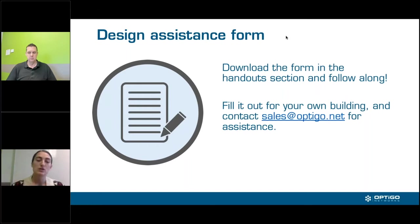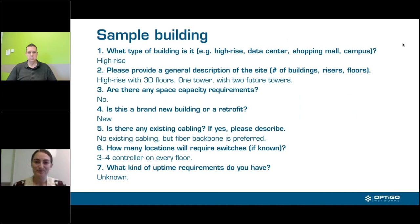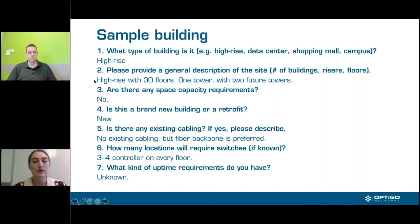Either you fill the design assistance form out if you know what the network is going to look like, or get your customer to fill it out. Attached to this webinar in the handout we have an example form filled in, and in the email you also have a blank one. We're using the filled-in one for this webinar. This is the form — this is half of the questions. We ask what type of building it is — in this case it's a high-rise with 30 floors, one tower currently, two more in the future, no space capacity requirements.